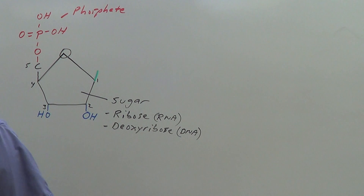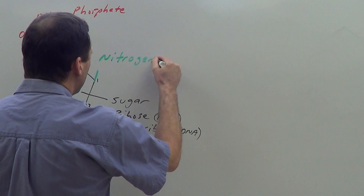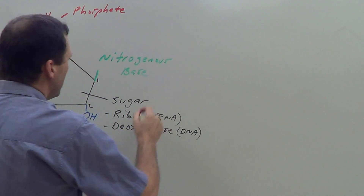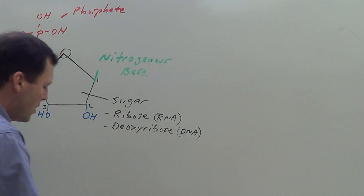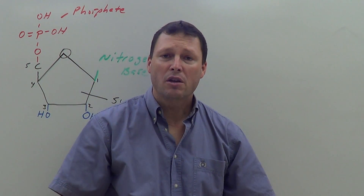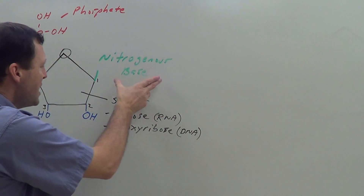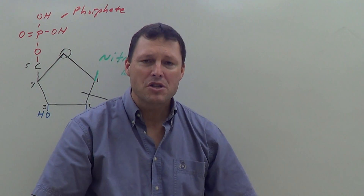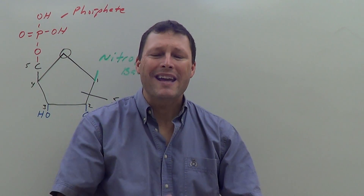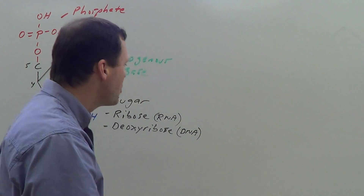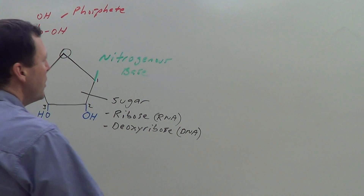The third part of a nucleotide is the nitrogenous base, connected to the first carbon. It's called a nitrogenous base because these molecules contain nitrogen. They are actually acid-base type structures — pH type bases — meaning they have a tendency to accept hydrogen ions, which is why they're called nitrogenous bases.